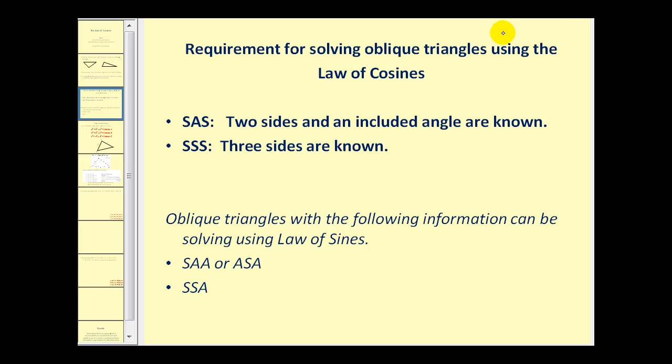The requirements for solving oblique triangles using the law of cosines is side-angle-side, where two sides and an included angle are known, or side-side-side where all three sides are known.